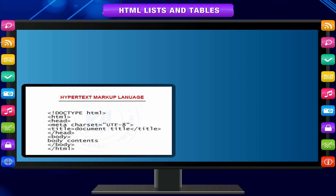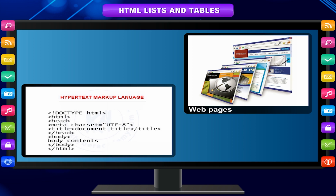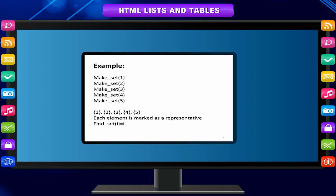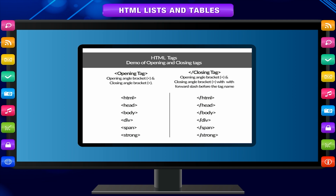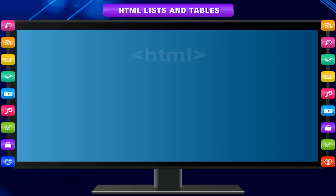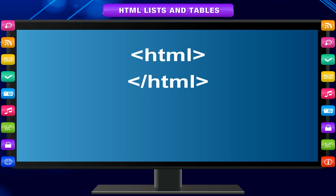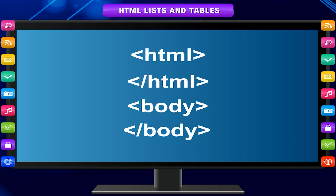HTML, hypertext markup language, is used to create webpages. HTML documents consist of HTML elements and their attributes. Each element is marked with an opening and closing tag, and these tags are enclosed within angle braces. Except for a few tags, most tags have their corresponding closing tags. For example, the HTML tag has its closing tag slash HTML, and the body tag has its closing tag slash body.